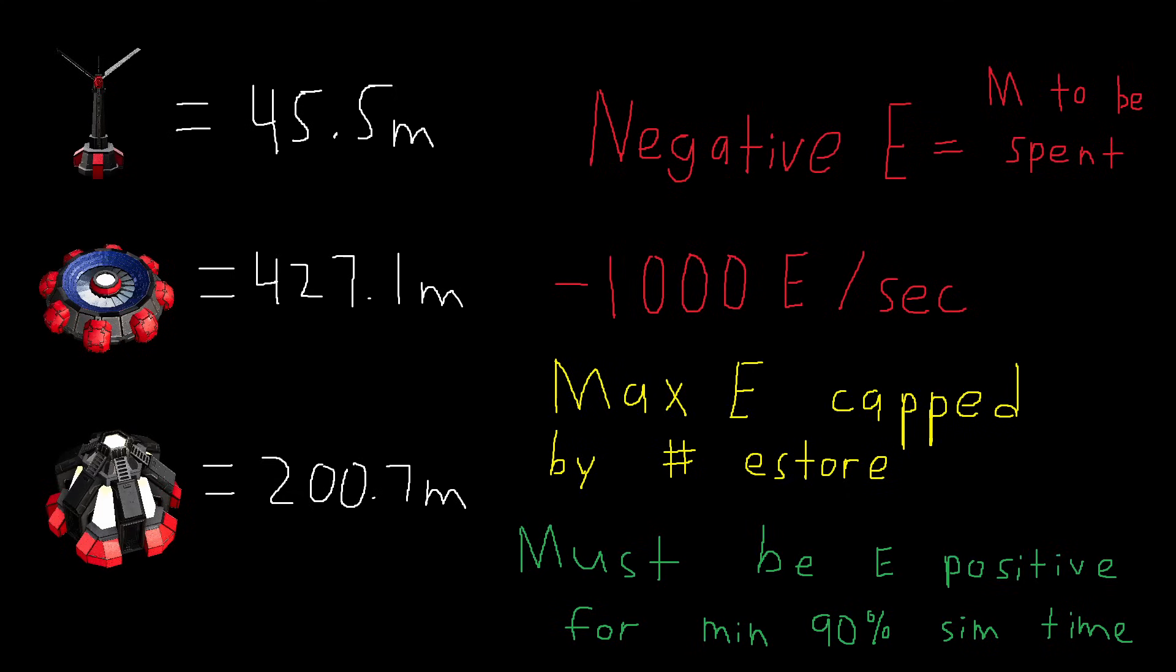The simulation has to be net energy positive for at least a certain percentage of time, whilst that combination of buildings is disqualified. For my tests, I was doing it at a minimum of 90%, otherwise it would get disqualified. At the end of the simulations, those that passed have their building's metal costs summed up, including e-cost converted to metal, and the cheapest solution is chosen.